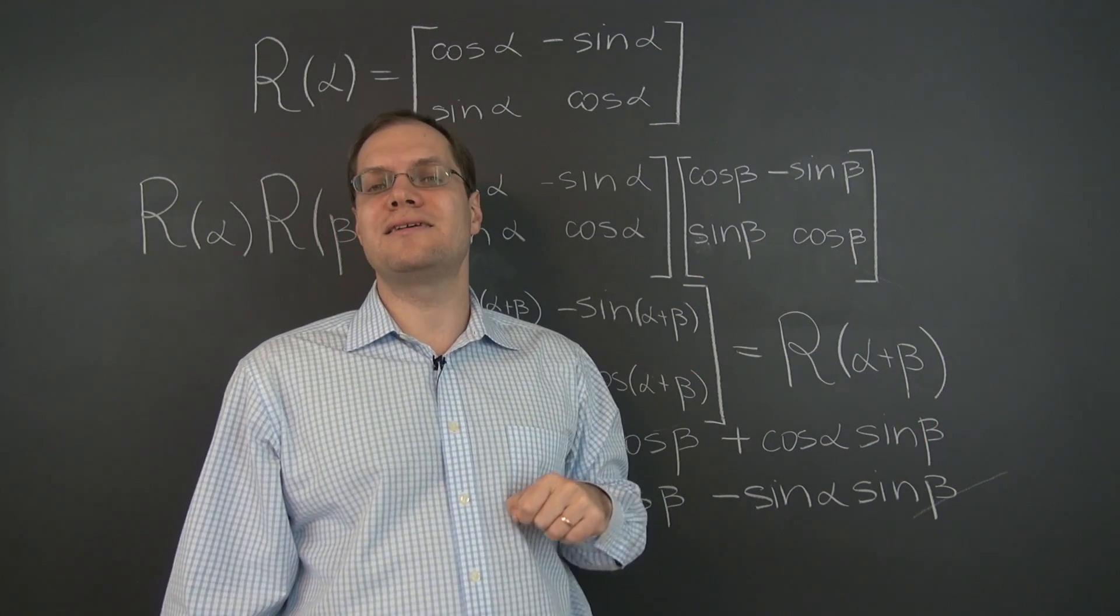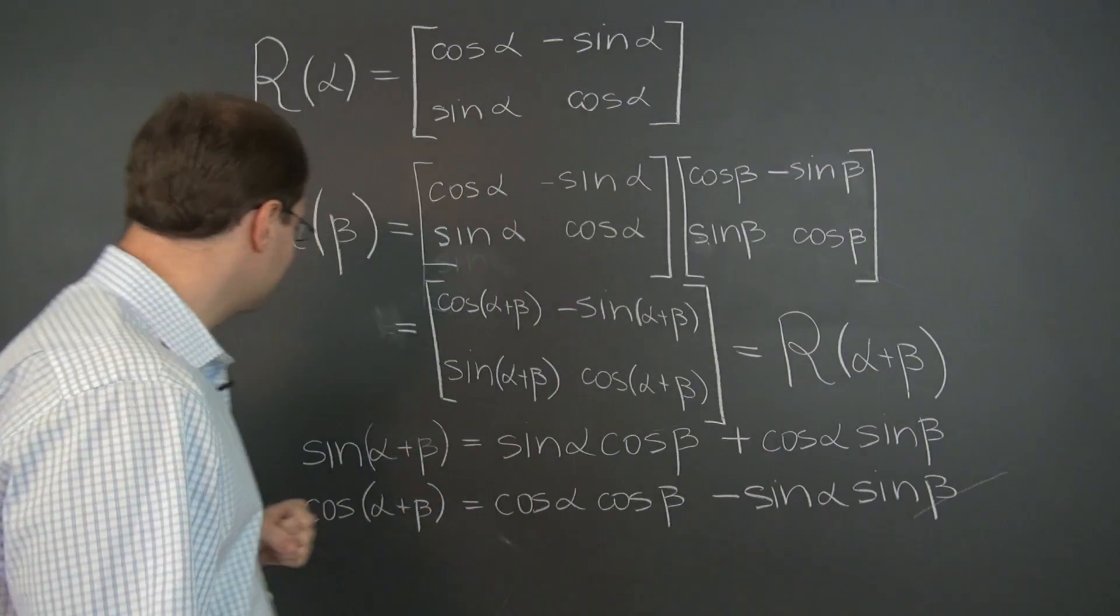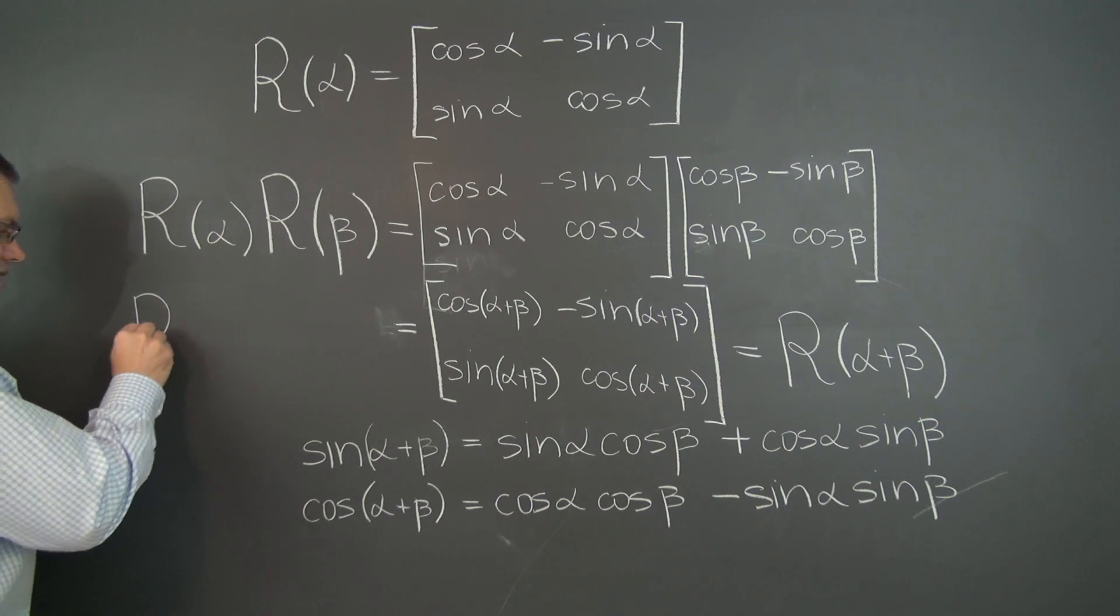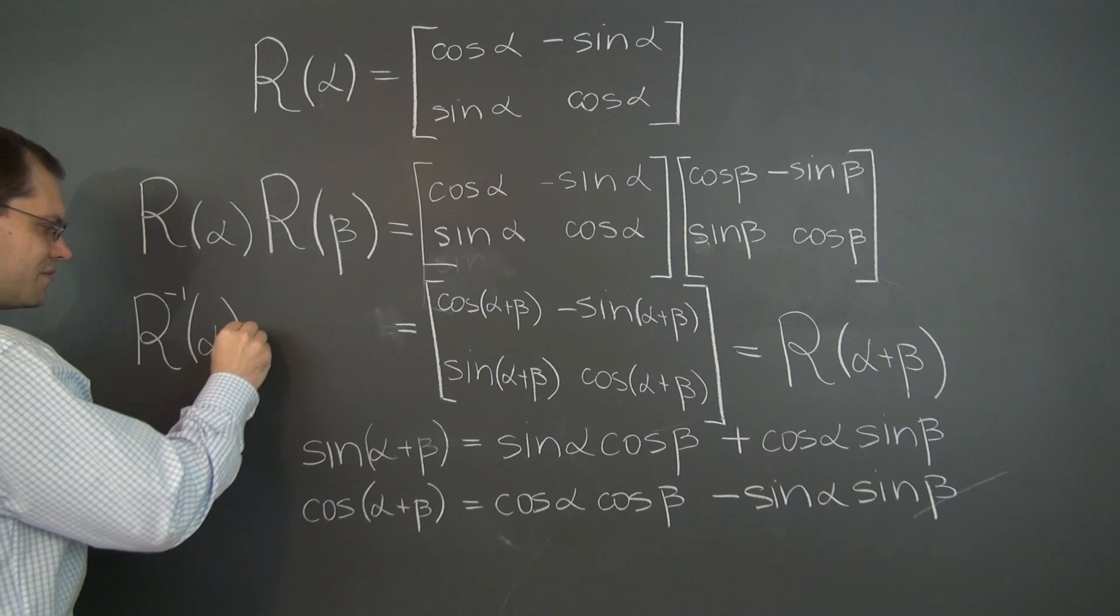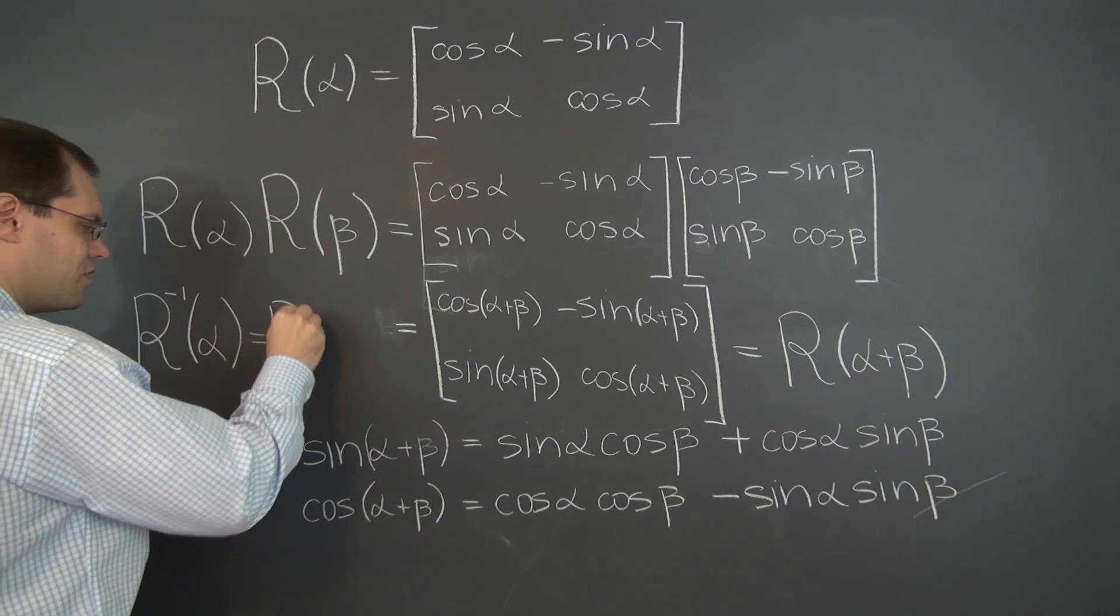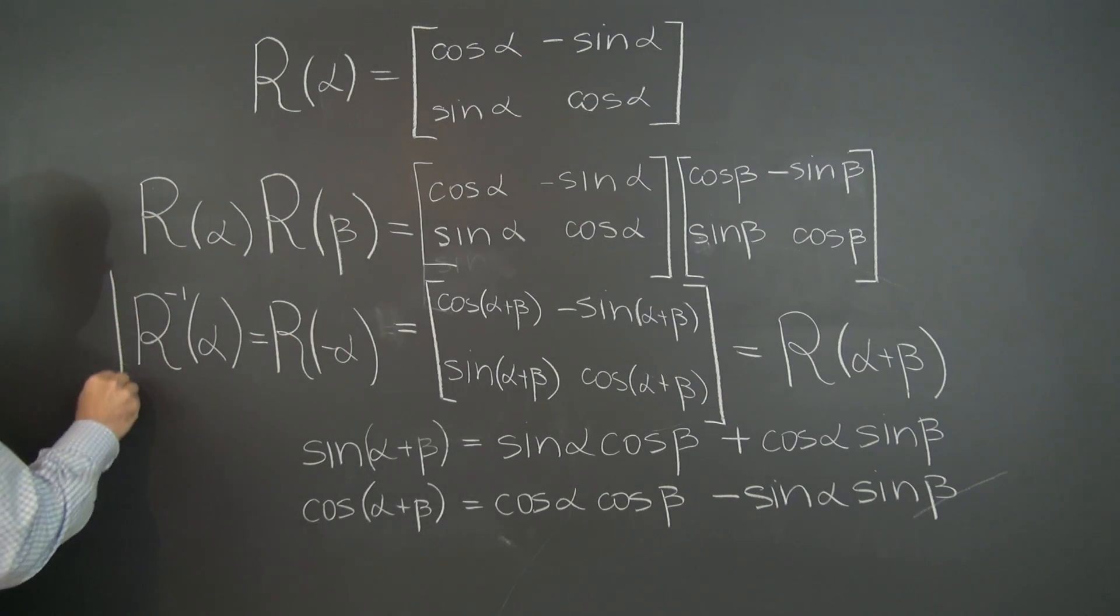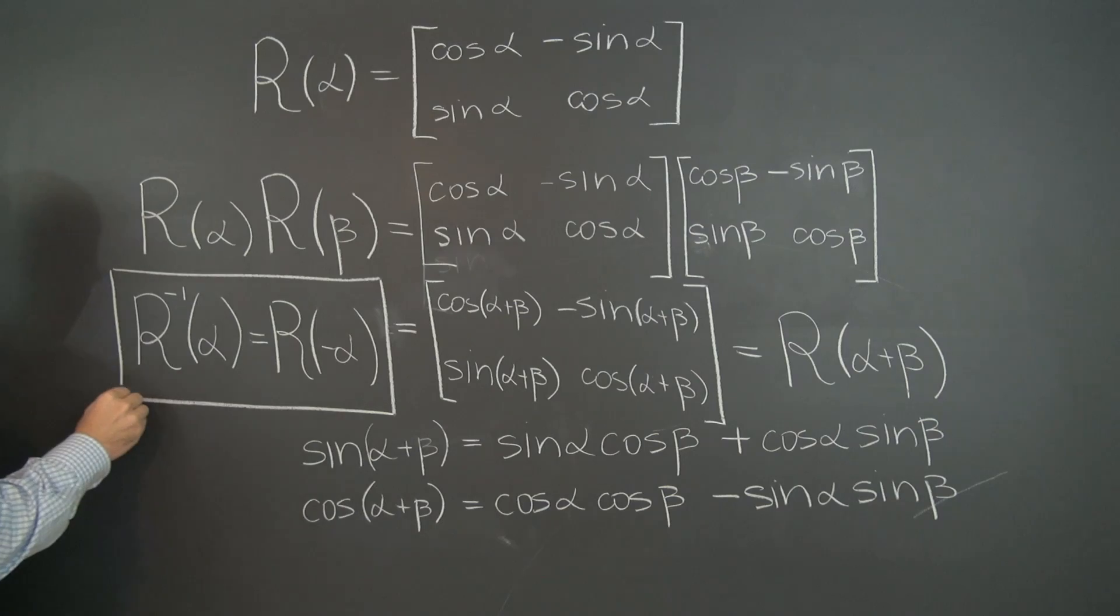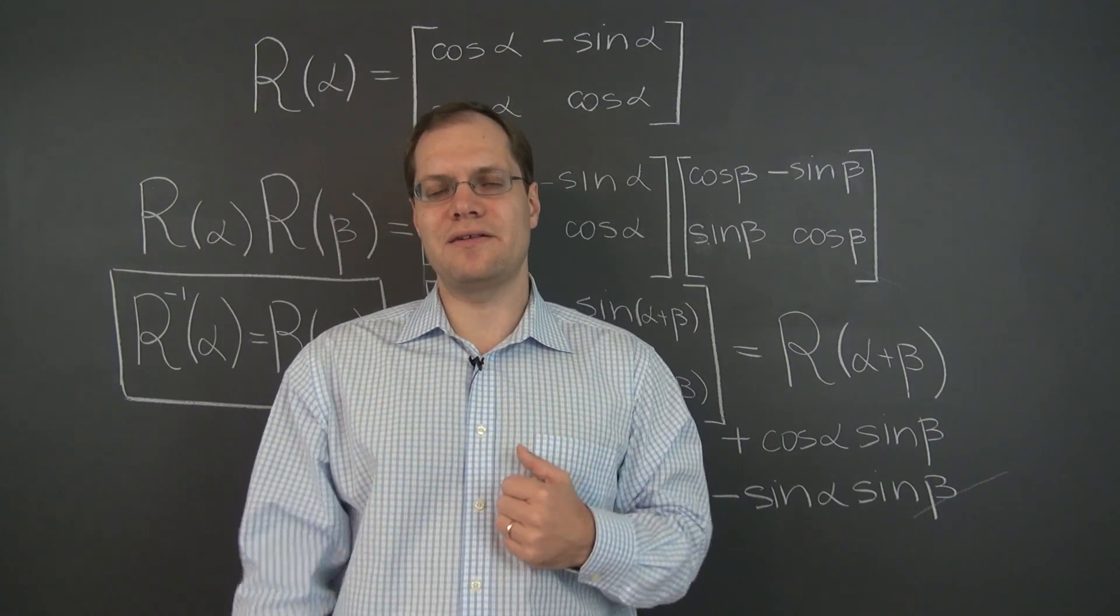So R of minus alpha is the inverse of R of alpha, which is also its transpose. I have space to write it here. The inverse of R of alpha is R of negative alpha. And this gets boxed for its fantastic elegance and lots of other things.